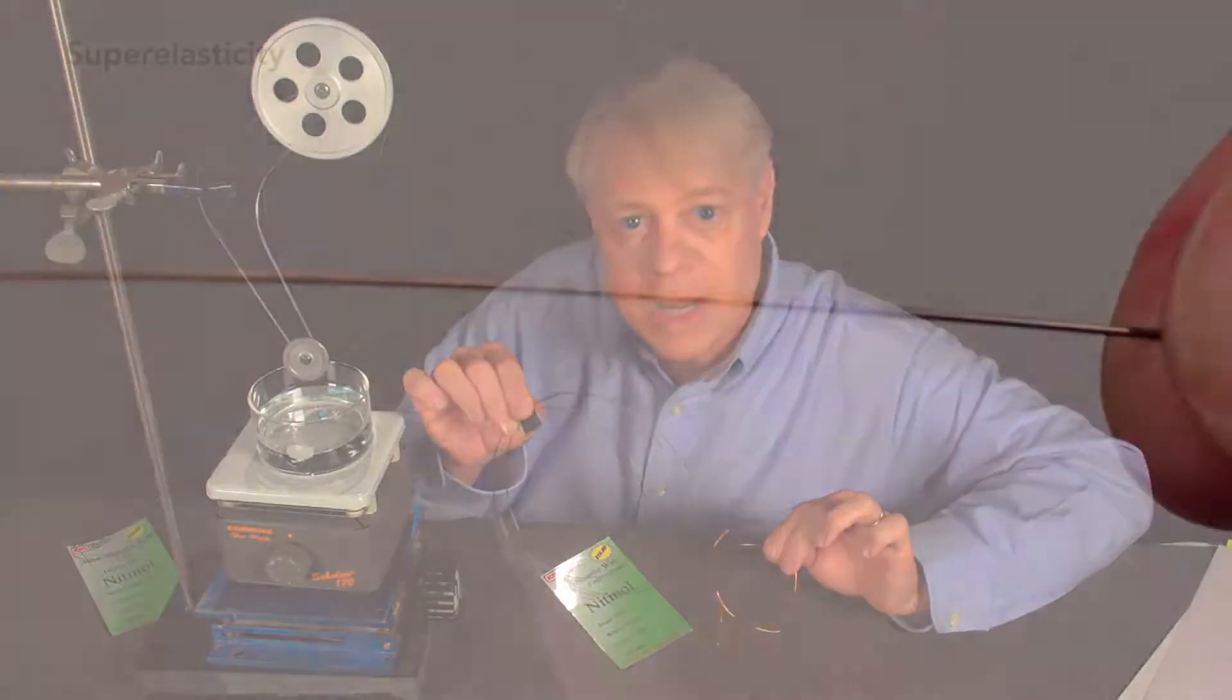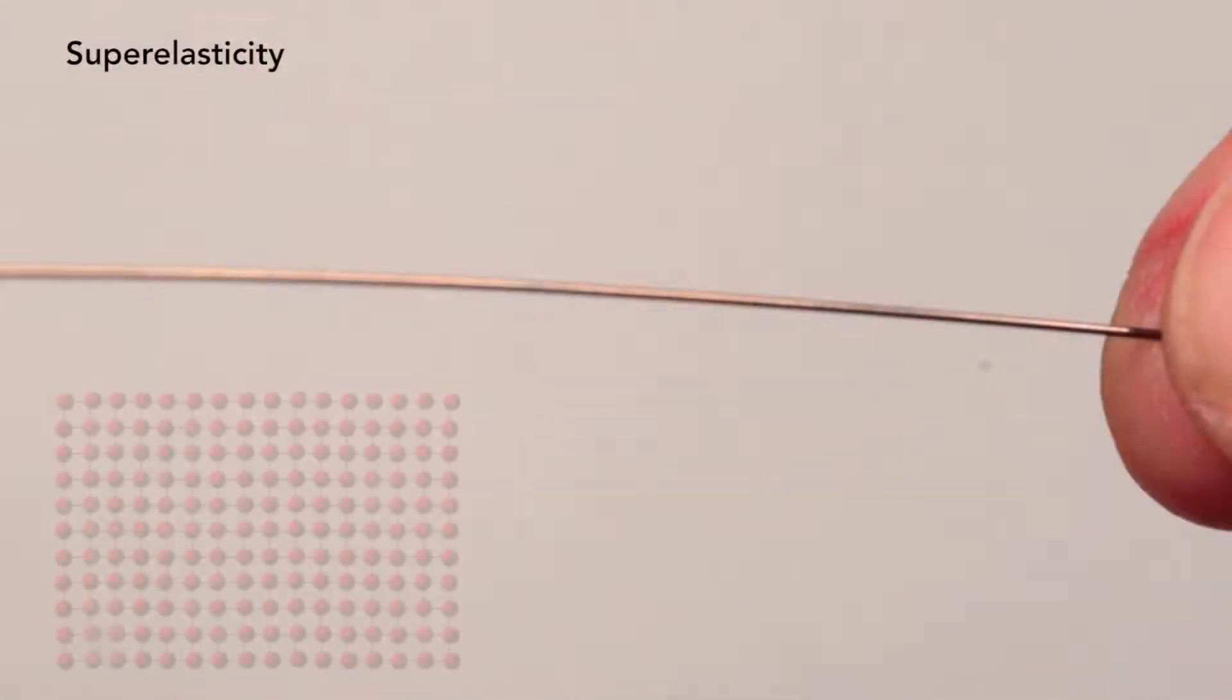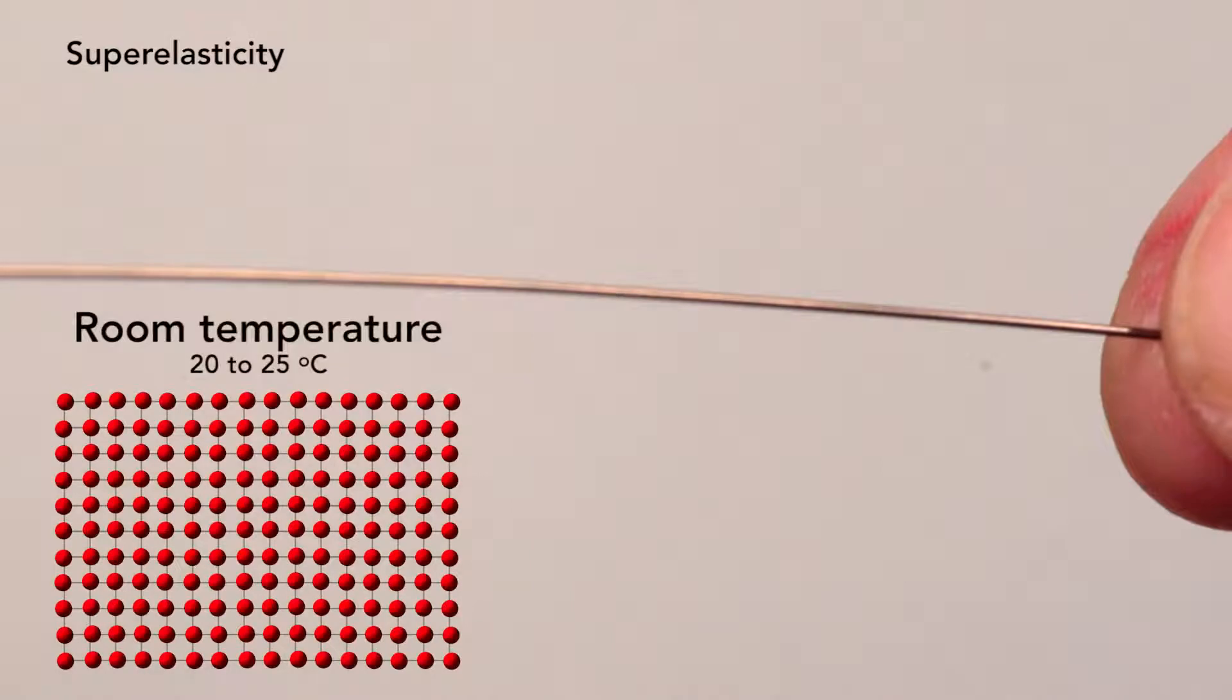Now let's look at a nitinol wire that showed super-elasticity. It's been conditioned so that its crystal structure is those tidy, neat squares at room temperature. It would form the twin structure at minus 15 degrees Celsius, so a much lower temperature than the shape memory effect.